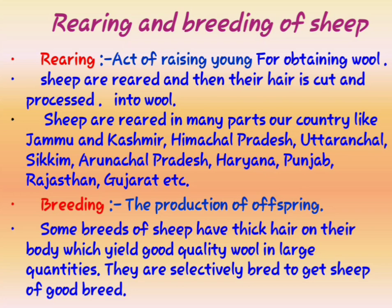For example, like in human beings — if father is fair and mother is fair, the child will also be fair. In the same way, in sheep we select the parents and allow them to breed. Breed means to produce young ones. This process of selecting parents and allowing them to produce young ones is called selective breeding.